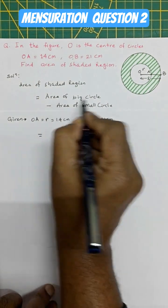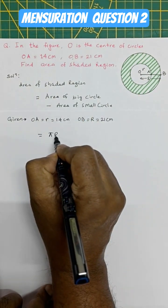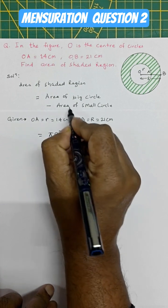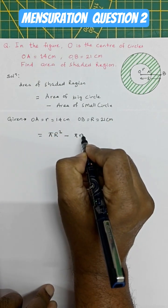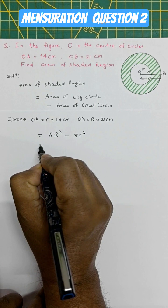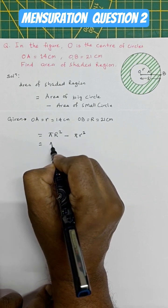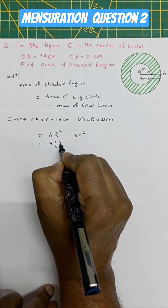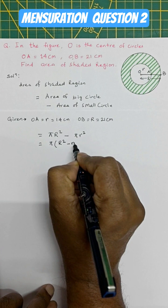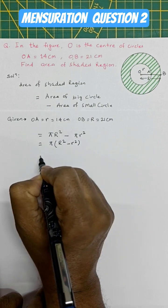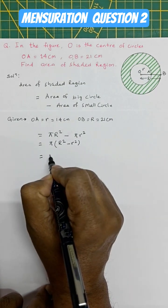So area of bigger circle, that is pi R squared, minus area of small circle, that is pi r squared. Here you can write like this: pi R squared minus r squared. Now put the value of pi.